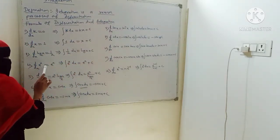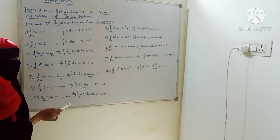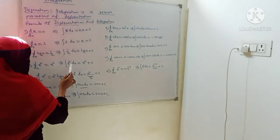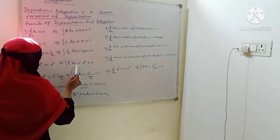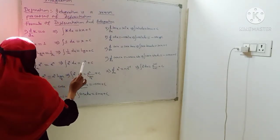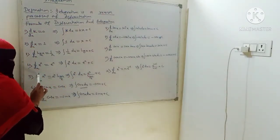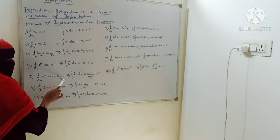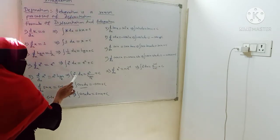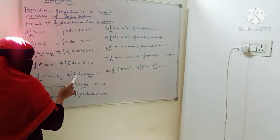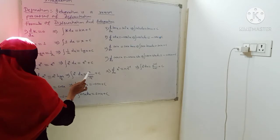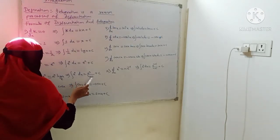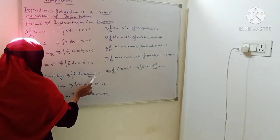d/dx of e to the x is e to the x. Integration of e to the x is e to the x plus C. d/dx of a to the x is a to the x times log a. Integration of a to the x is a to the x divided by log a, plus C.